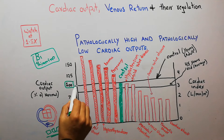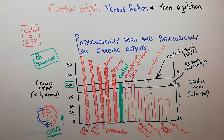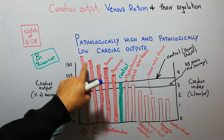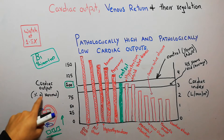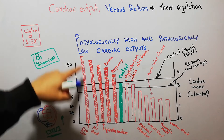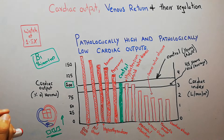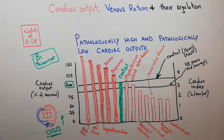Comparing with the 100% control point on the graph, in beriberi the cardiac output has increased quite above the control point. So beriberi, or deficiency of thiamine, is one condition that causes pathologically high cardiac output.